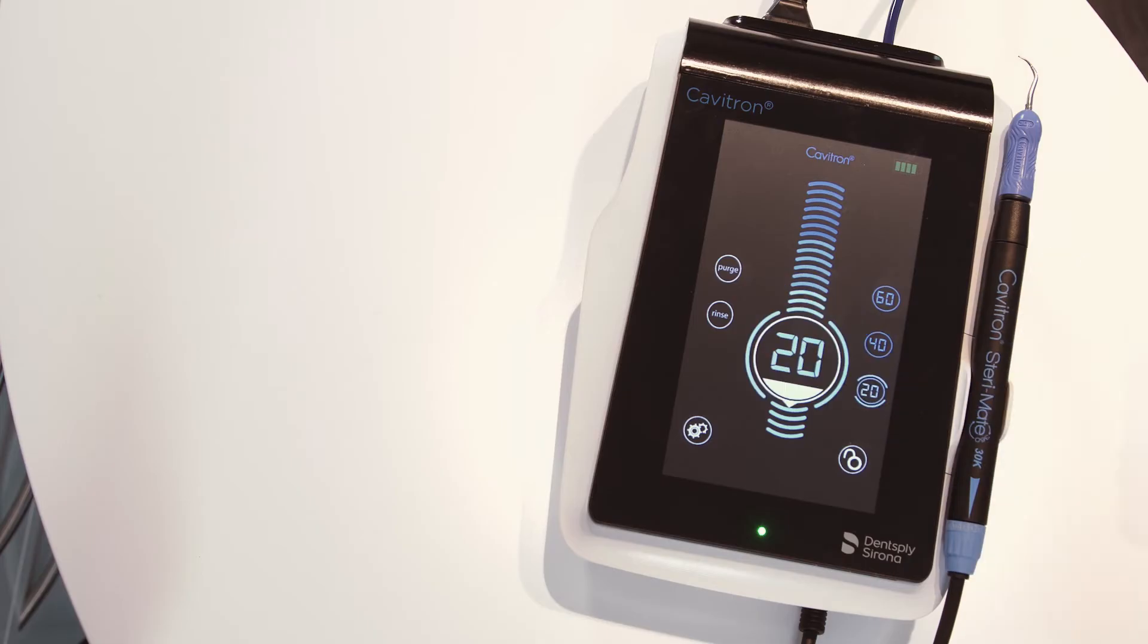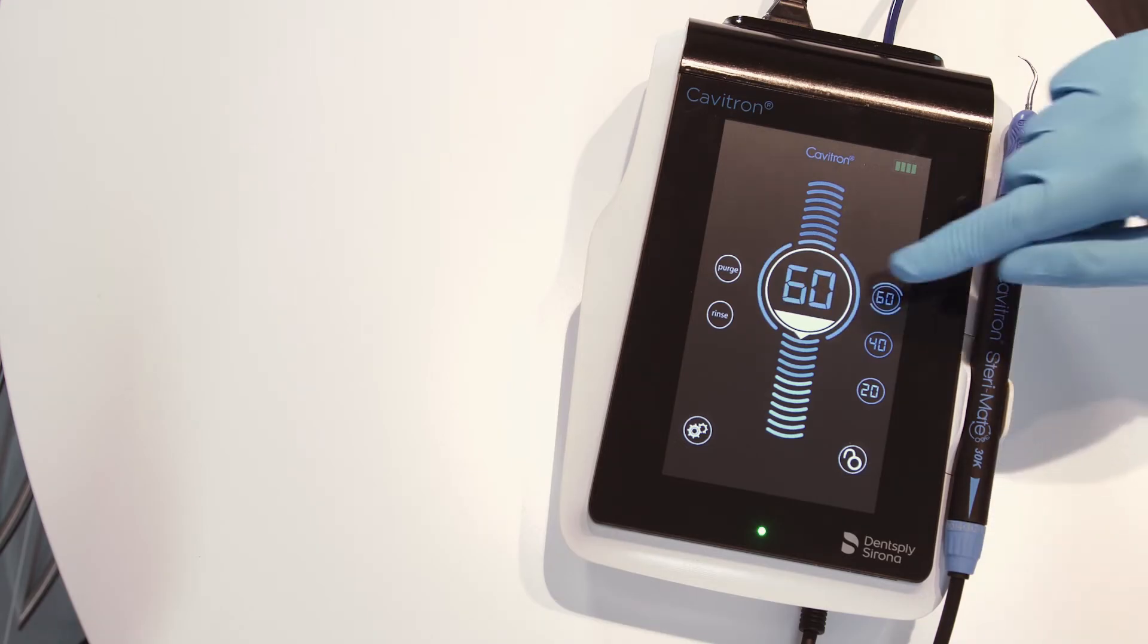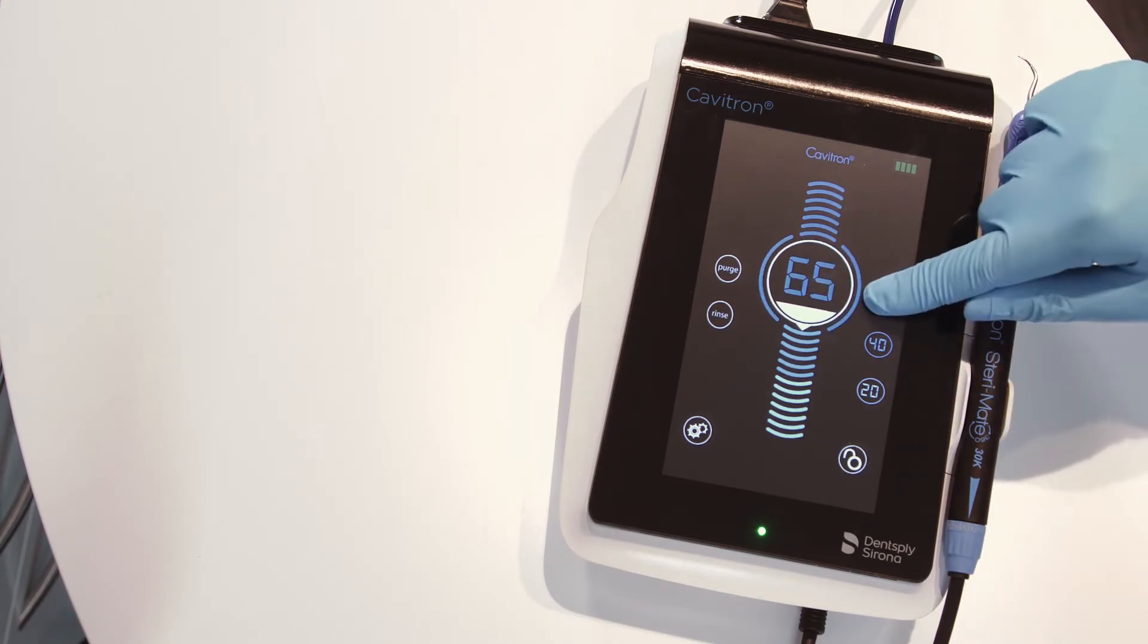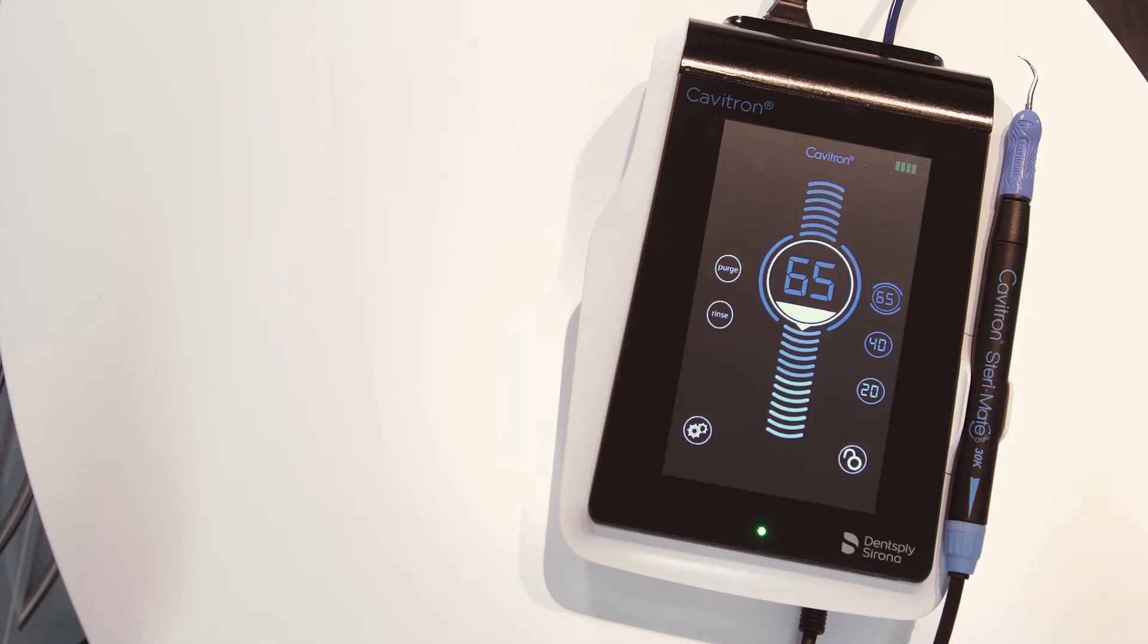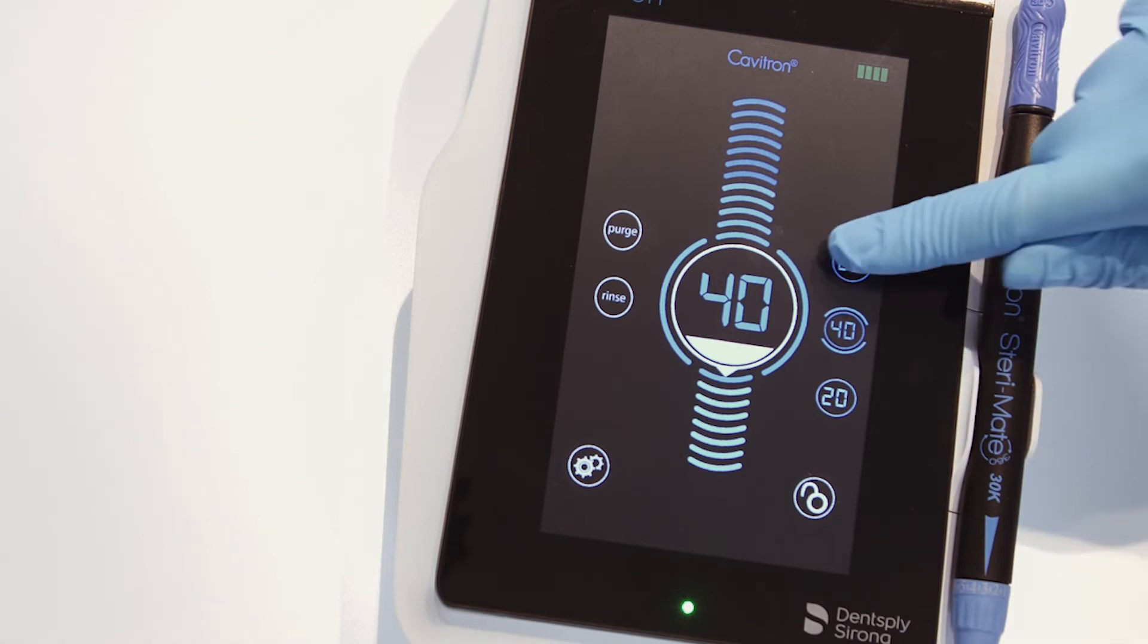The user can adjust the power level for increased power. Three power preset options are available. Please adjust the power level to your desired output, and press and hold the preset button until the sound indicator is heard to reset. The factory setting for the presets are 20, 40, 60.